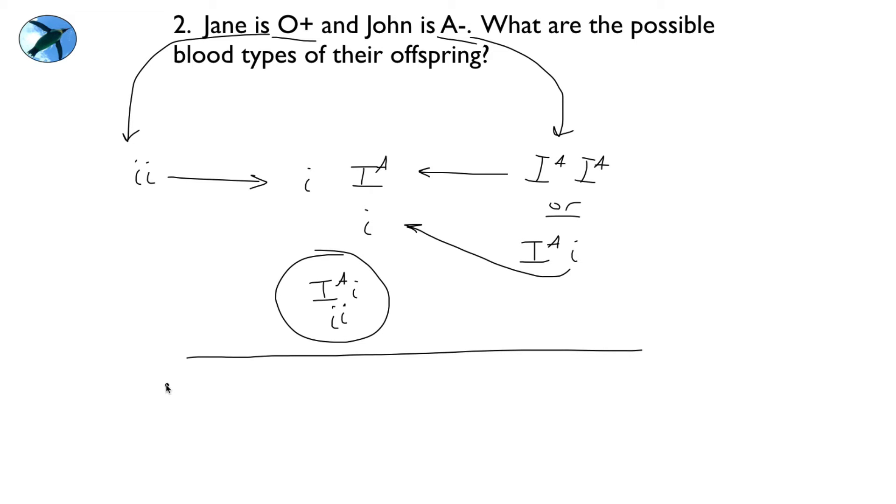Okay, what about the Rh antigen? So Jane is positive, which means that she could either be homozygous for Rh or heterozygous. So that means that her eggs will either carry the big D, Rh positive, or the little d.